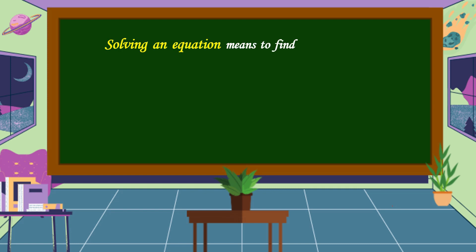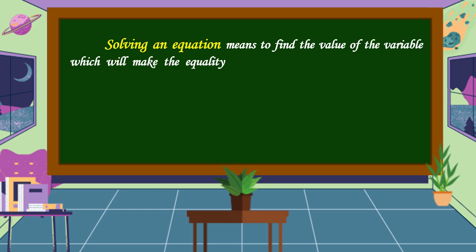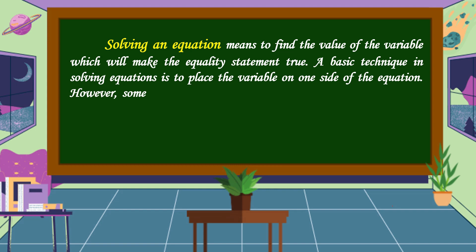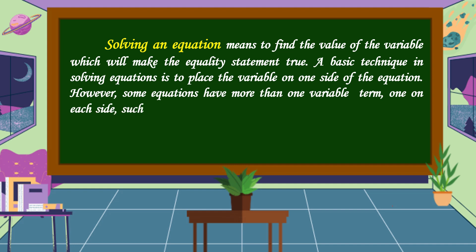Solving an equation means finding the value of the variable which will make the equality statement true. A basic technique in solving equations is to place the variable on one side of the equation. However, some equations have more than one variable term, one on each side.